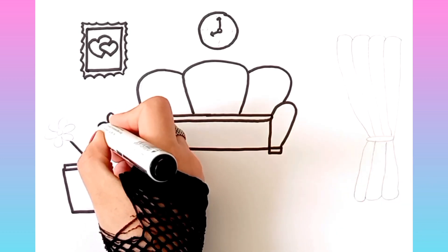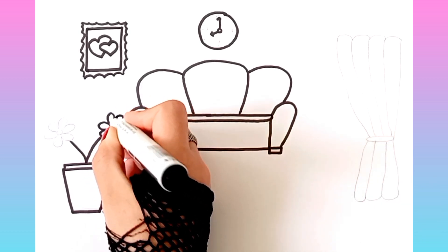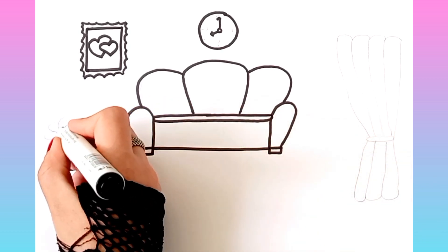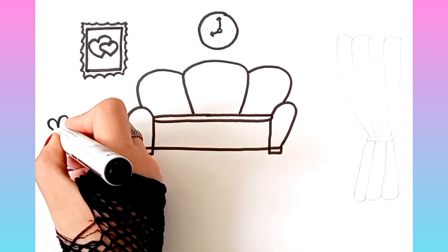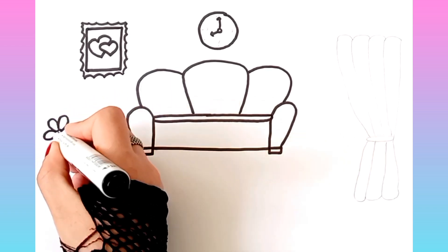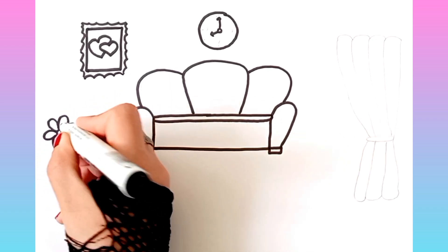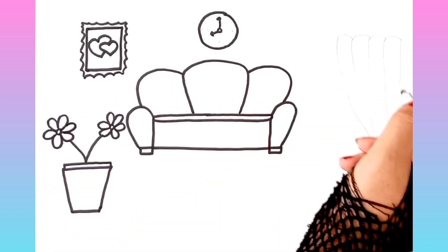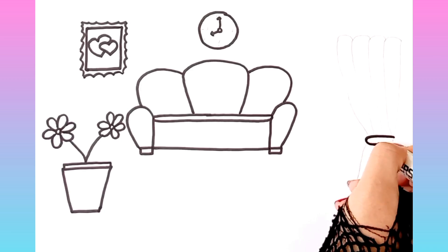N is for net, n, n, net. O is for orange, o, o, orange. P is for pet, p, p, pet.